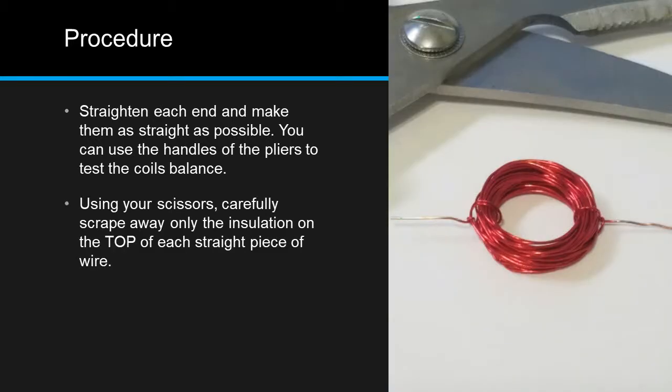Using your scissors, carefully scrape away only the insulation on the top of each straight piece of wire. This will allow the coil to conduct electricity when one side is facing up, but not when the other side is facing up. This interruption in conductivity is necessary for the motor to operate. If the coil always conducted, it would lock into just one position over the magnet.